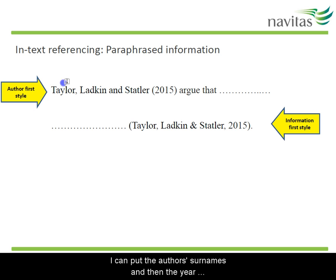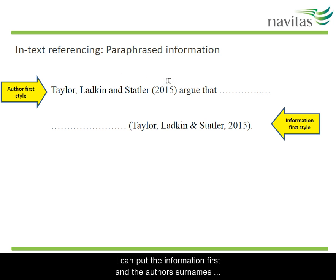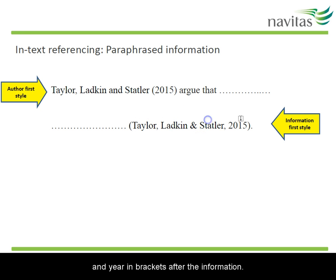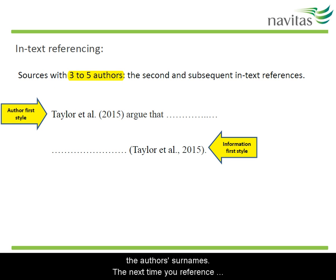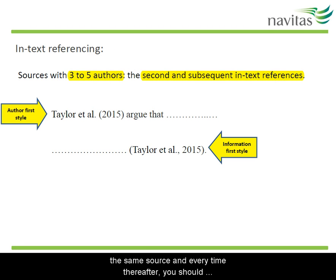I can put the author's surnames and then the year in brackets first in my sentence, or I can put the information first and the author's surnames and year in brackets after the information. Just a note here: if the source has three, four or five authors, the first time you reference it in text, you put all the author's surnames. The next time you reference the same source and every time thereafter, you should use et al., as shown here.